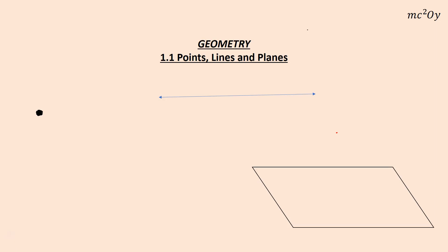We're going to talk about 1.1: points, lines, and planes. Just had my nice pumpkin spice coffee, so I'm ready to go. Nice thing about fall.